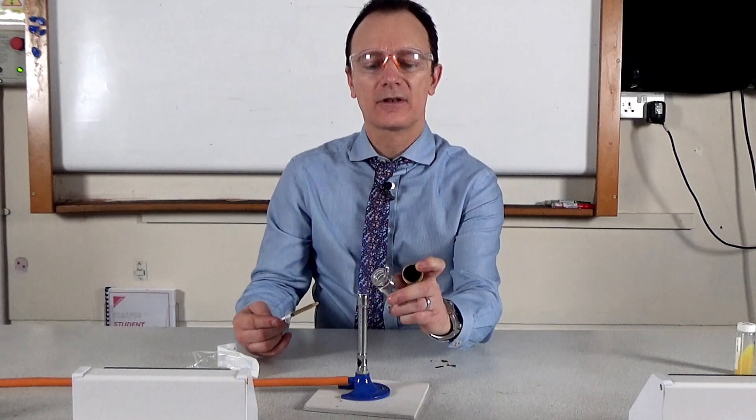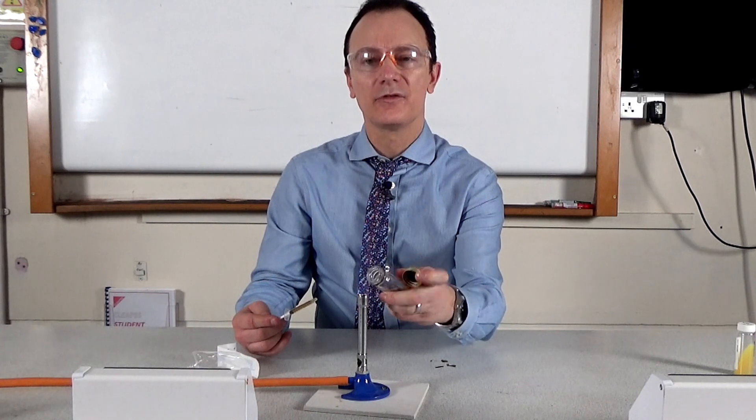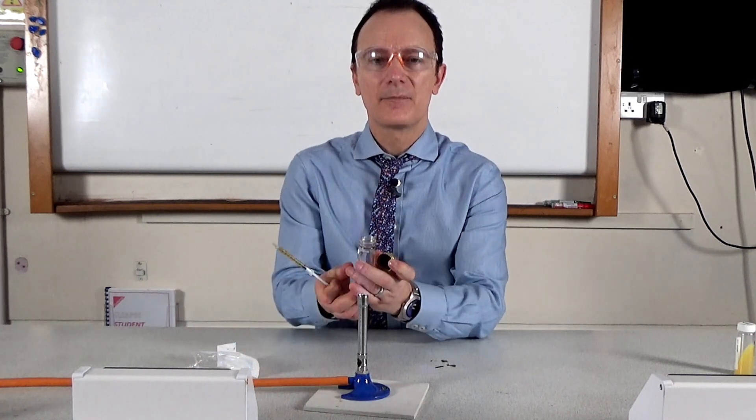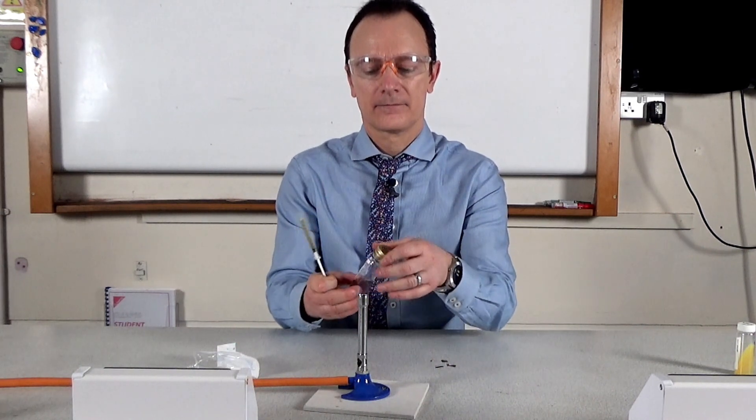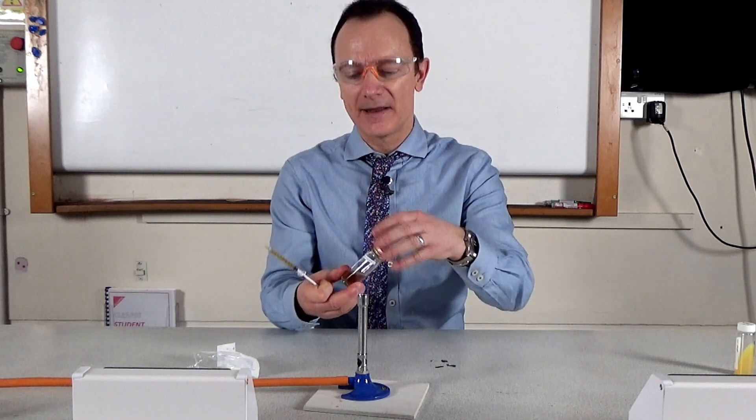Flame the neck of the bottle again by twisting it in the blue Bunsen burner flame, then we place the lid and now the bottle can be placed back on the bench.